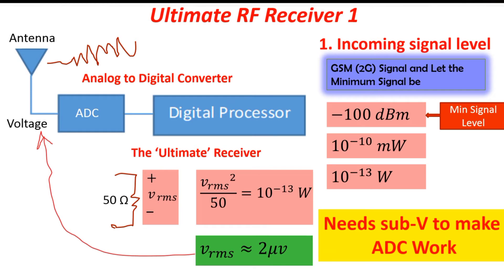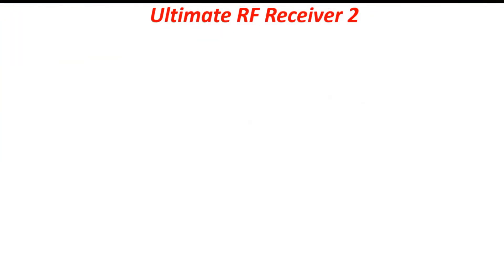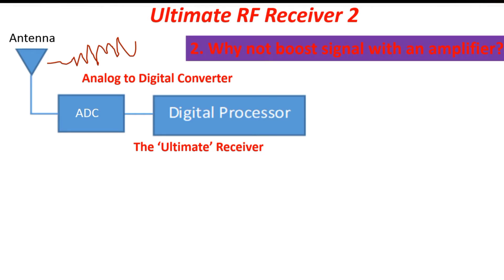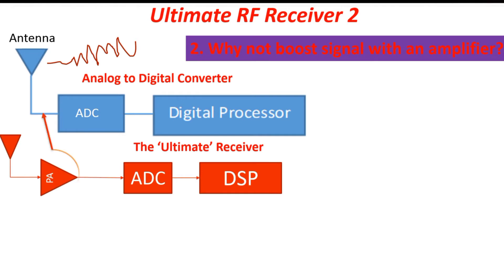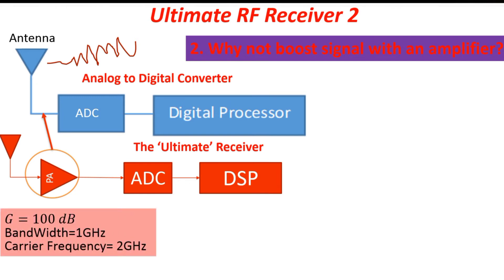You might say: if the signal level is too low, why not just add an amplifier right after the antenna? The question then becomes how much amplification do we need. From the previous discussion, we need to go from microvolt levels to sub-volts, so we need amplification on the order of roughly 100 decibels. Now how realistic is it to make an amplifier at 2 gigahertz, or 1 gigahertz — very typical RF frequencies — with a gain of 100 decibels?